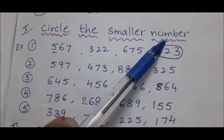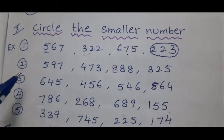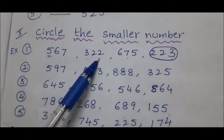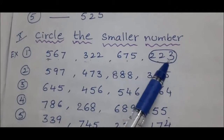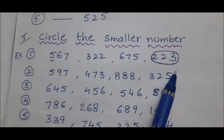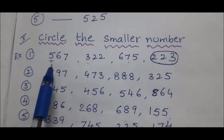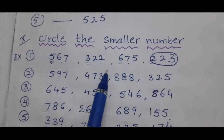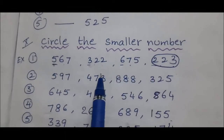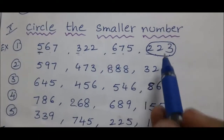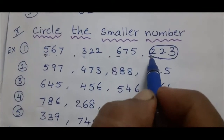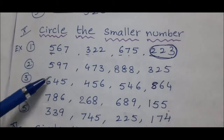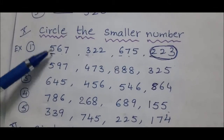Next topic: circle the smaller number. How do we find the smaller number? First, we compare digits. Example: 567, 322, 675, 223 — these are all 3-digit numbers. We compare the hundreds place: 5, 3, 6, 2. The number with the smaller hundreds digit is the smaller number. 2 is in the hundreds place, so 223 is the smallest number. Remaining problems, follow the above example.